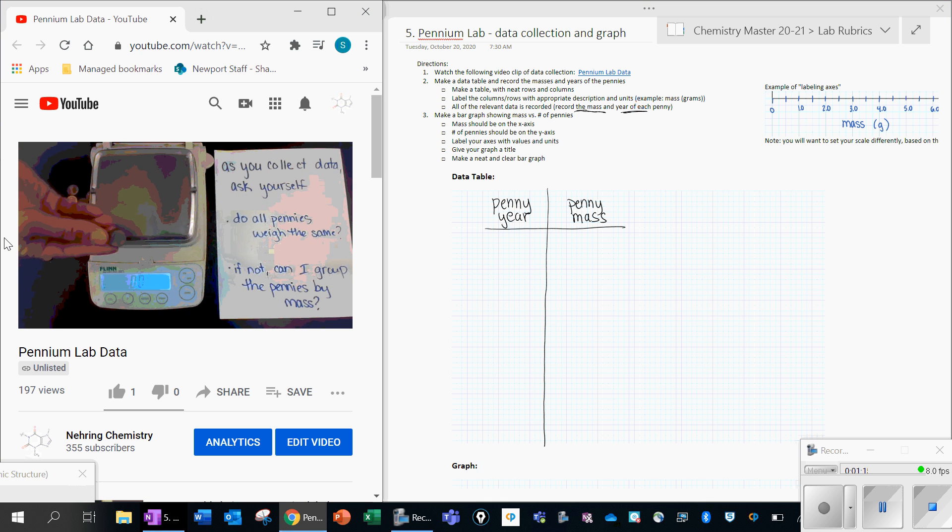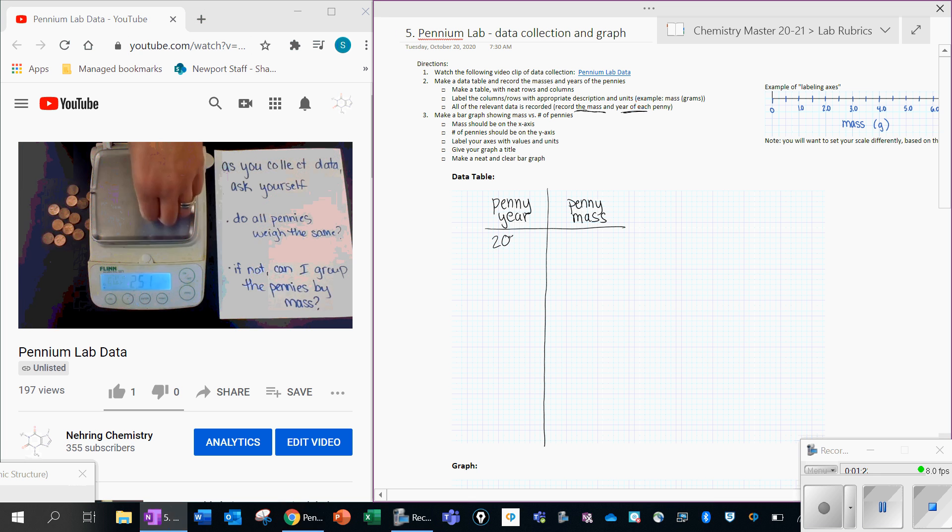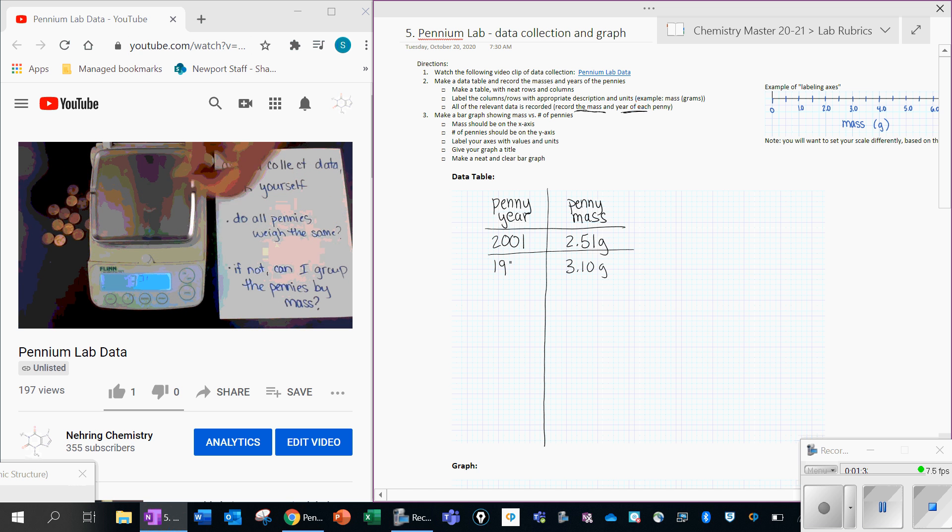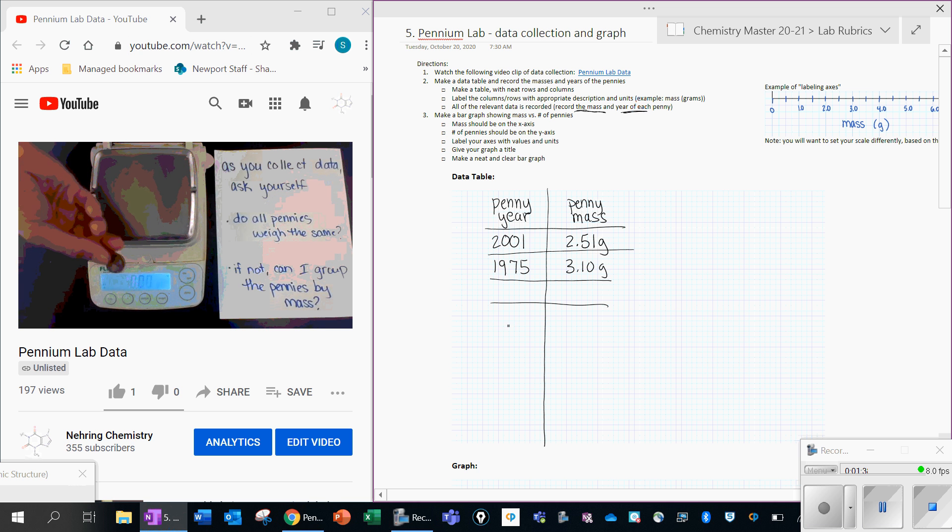And you can just watch the pennies being weighed. If you have the volume on, you can hear me reading out the masses. So like this one, that maybe the penny year is like 2001. And then the mass is like 2.51 grams. And then you would do the same thing for the next penny. This one's 3.10 grams. Maybe this is from like 1975. I don't remember what they were exactly. But you would just keep doing that for all your pennies.